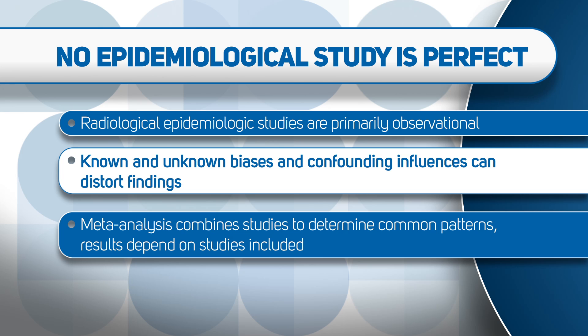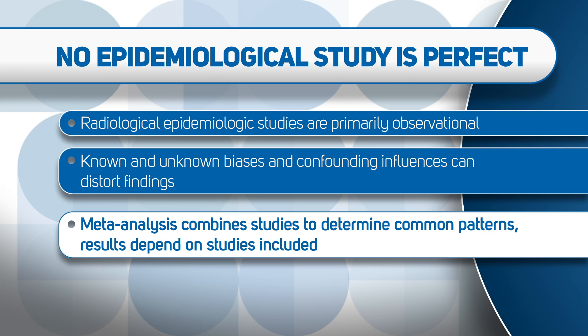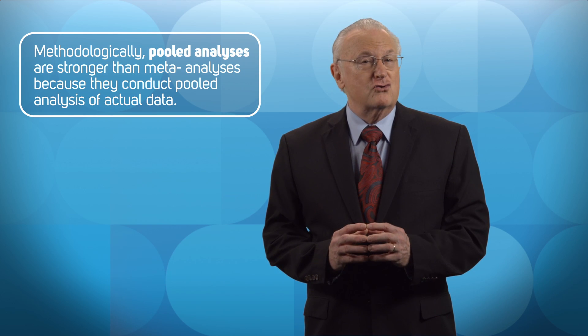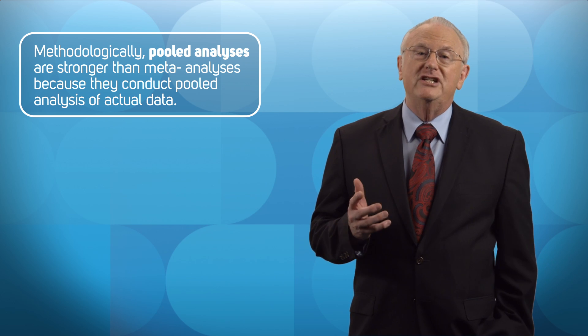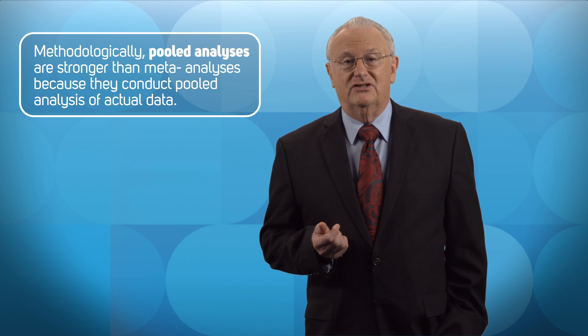Not all studies are equal, and even the good designs can produce flawed findings. Another technique used by epidemiologists is called meta-analysis. For this type of analysis, you put together all the studies of a similar topic, such as all the underground uranium miners and other miners exposed to radon. You then look for common patterns and get better precision to estimate radiation risks and to evaluate possible interaction. Meta-analyses are generally considered as combining studies in the literature, whereas pooled analyses are stronger methodologically because the actual data for each study is obtained and a pooled analysis is conducted.